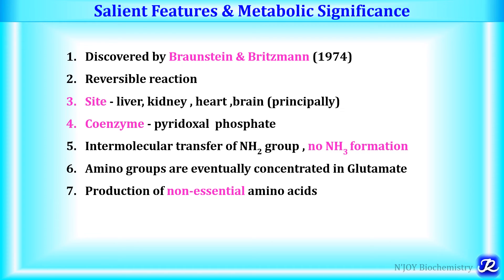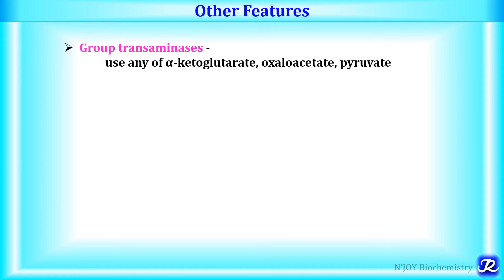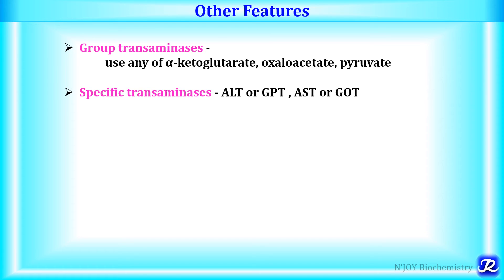A key metabolic significance is the production of non-essential amino acids required for protein synthesis. Transamination is involved in the synthesis of non-essential amino acids by redistribution of amino groups among amino acids and keto acids, making it very important for protein biosynthesis. Transaminases use any of alpha-ketoglutarate, oxaloacetate, or pyruvate. Specific transaminases include ALT (also called HGPT) and AST (also called HGOT). Both have diagnostic importance: ALT is raised in liver diseases and AST is raised in myocardial infarction.